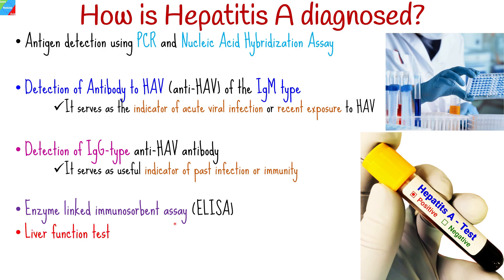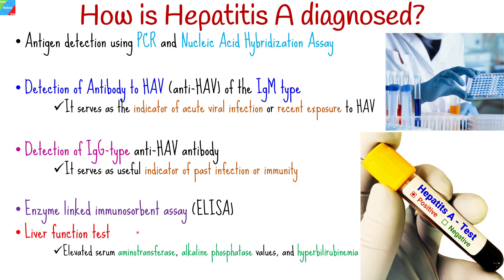Liver function tests are also performed. Variable but consistent elevations of biochemical indices of liver injury — such as elevated serum aminotransferases, alkaline phosphatase values, and hyperbilirubinemia — are evident in nearly all affected individuals.